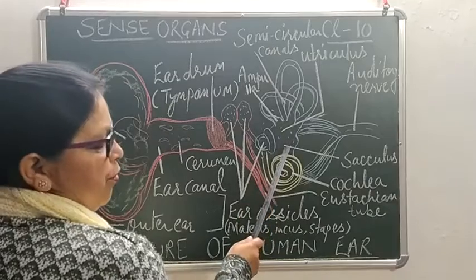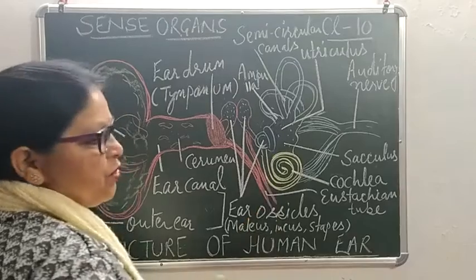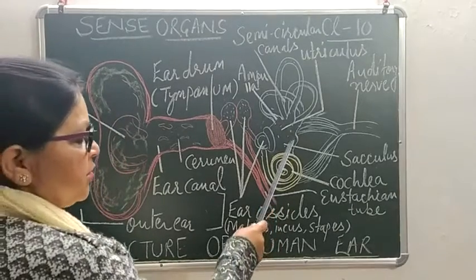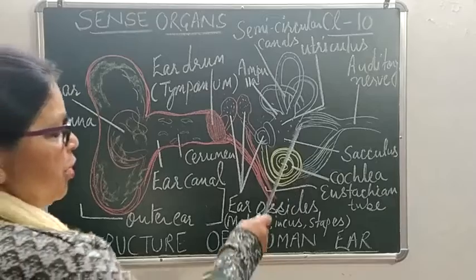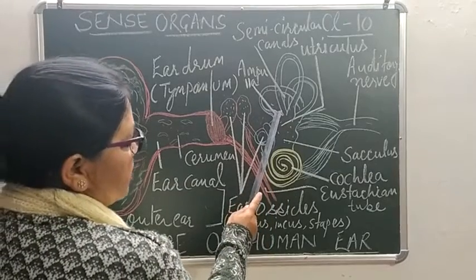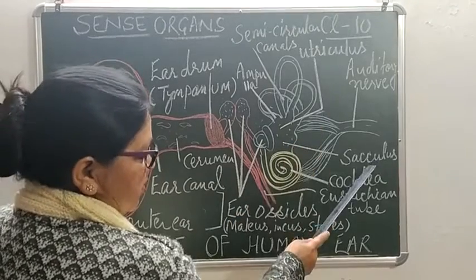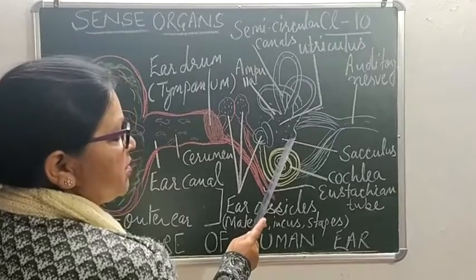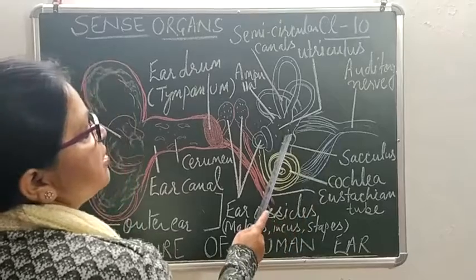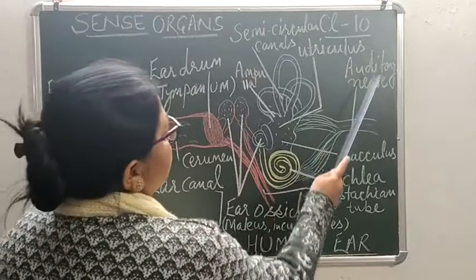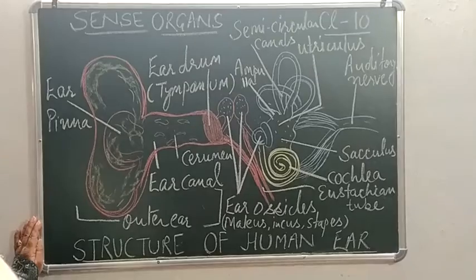So cochlea is meant for hearing and the semi-circular canals are meant for balance. There are two types of balance: dynamic balance, when the body is in motion, and static balance, when the body is stationary — for example, in a standing position. The ampulla has sensory cells helping in dynamic balance, and the utriculus and sacculus together — the vestibule — help in static balance. This impulse of balance is carried to the brain through the auditory nerve. In my next video I will explain the working of the whole ear.